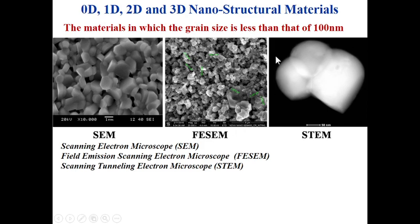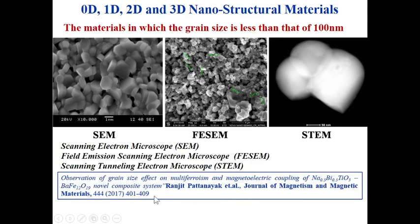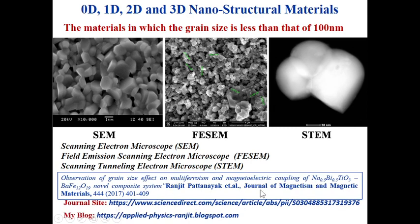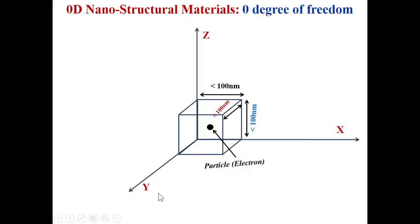Actually the definition should be refined: grain size less than 100 nanometers in any direction. Suppose along the x-direction it is nanometer-scale but along y it is micron-scale — it would still be called a nanostructural material. Based on this, materials are classified into 0D, 1D, 2D, and 3D. How changing grain size enhances electric and magnetic properties is work I have done in my PhD, published in the Journal of Magnetism and Magnetic Materials (JMM).